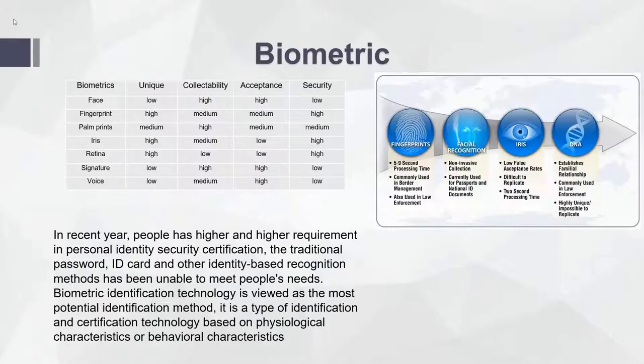First, biometrics. In recent years, people have higher and higher requirements in personal identity security certification. Traditional methods such as passwords and ID cards have been unable to meet people's needs. Biometric identification technology is labeled as the most potential identification method — a type of technology based on physiological or behavioral characteristics. From the comparison, face recognition has high collectability and acceptance, meaning it is easy to collect and people are easy to accept it.